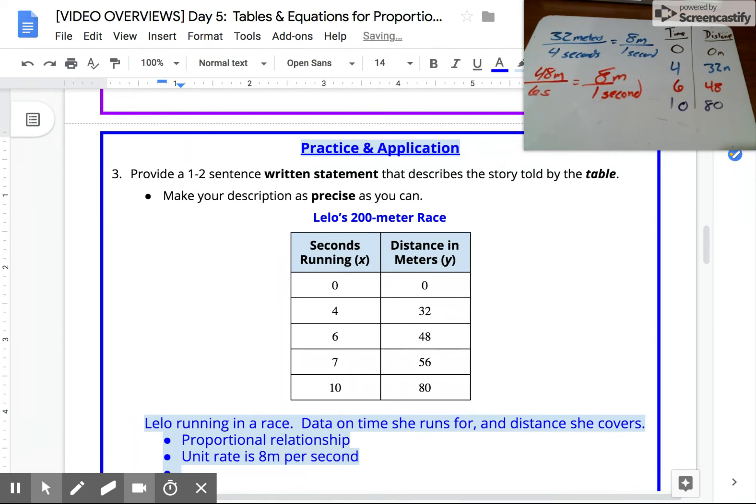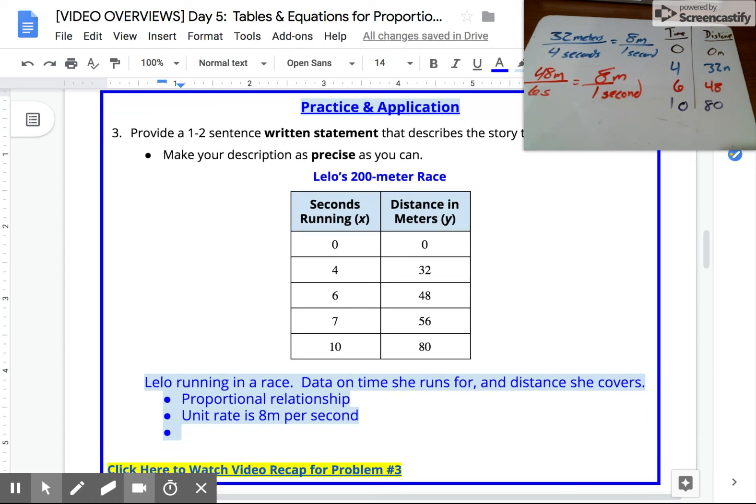And then if you're really understanding this at that point, we can also recognize a proportional relationship. This constant rate of change is telling us that her speed doesn't change. It's remaining constant at eight meters per one second.